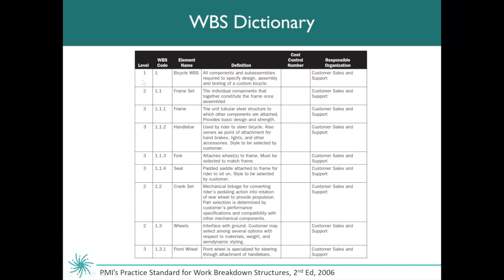So again, level one is the project level, then level two — for example, frame set — and then we break down into level three for each of the components. This is what a WBS dictionary looks like and it can easily be created in Excel.